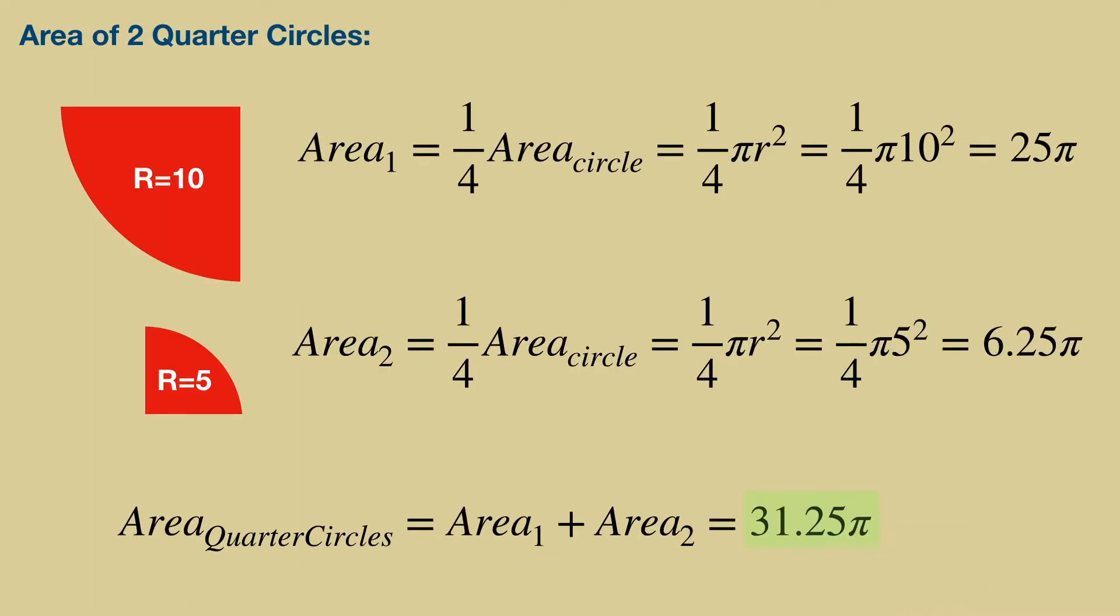The area of the quarter circle is 1/4th pi r squared. We see that the first quarter circle's area is 25 pi, while the second is 6.25 pi. So the combined area of the two red quarter circles is 31.25 pi.